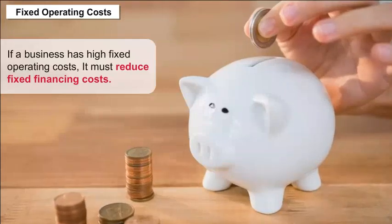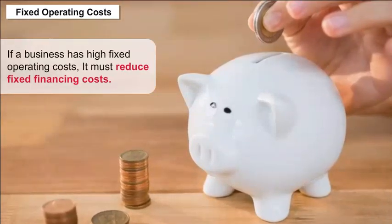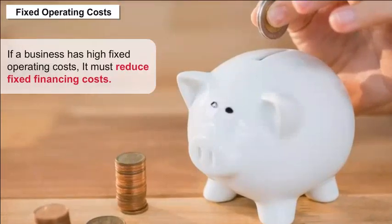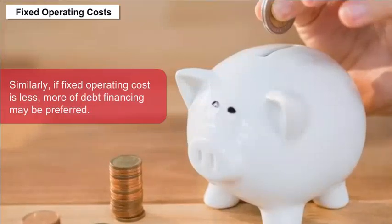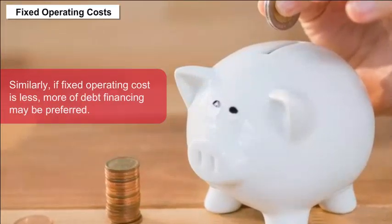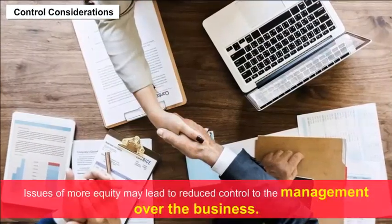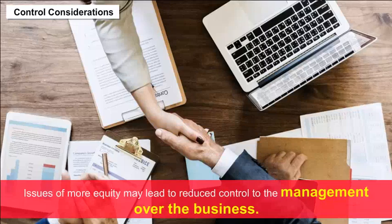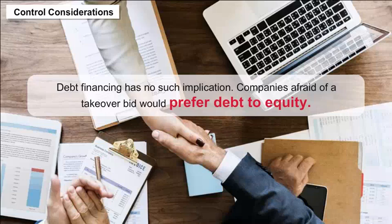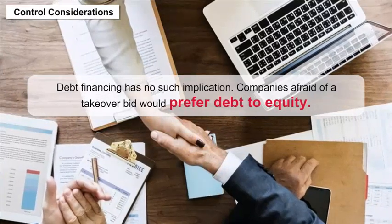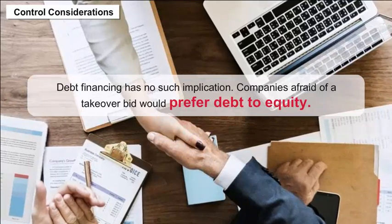A stronger cash flow position may make debt financing more viable than funding through equity. If a business has high fixed operating costs, it must reduce fixed financing costs; hence, lower debt financing is better. Similarly, if the fixed operating cost is less, more debt financing may be preferred. Control considerations: issuing more equity may lead to reduced management control over the business. Debt financing has no such implication; companies afraid of a takeover bid would prefer debt to equity.